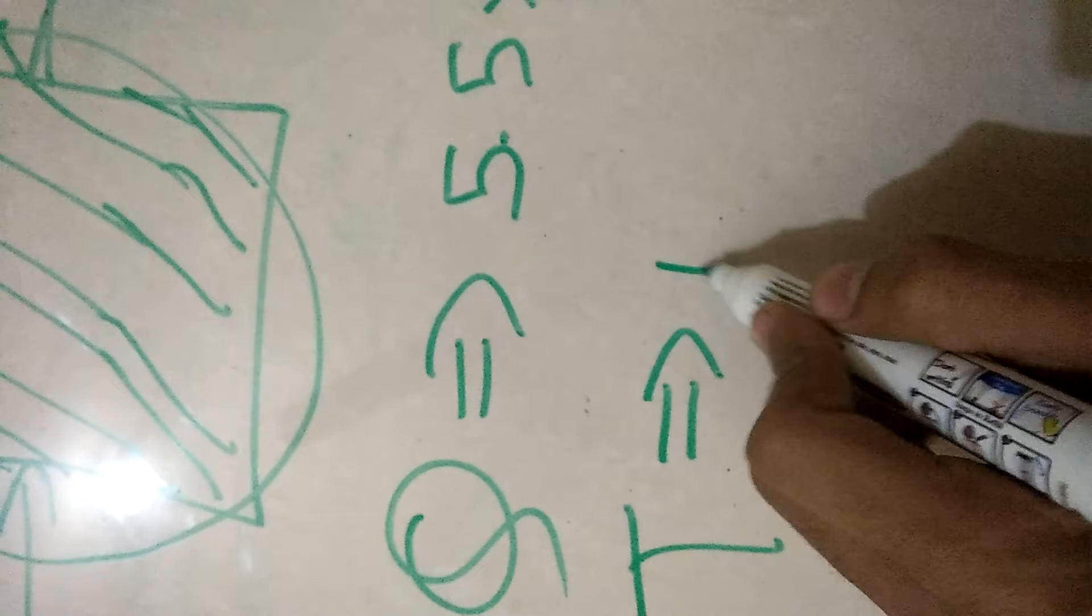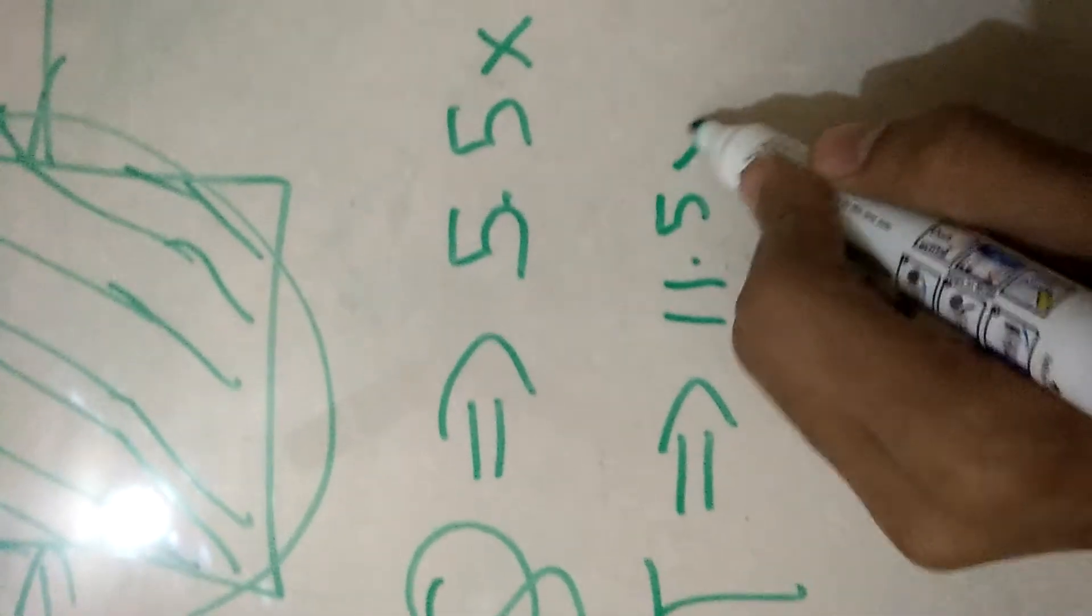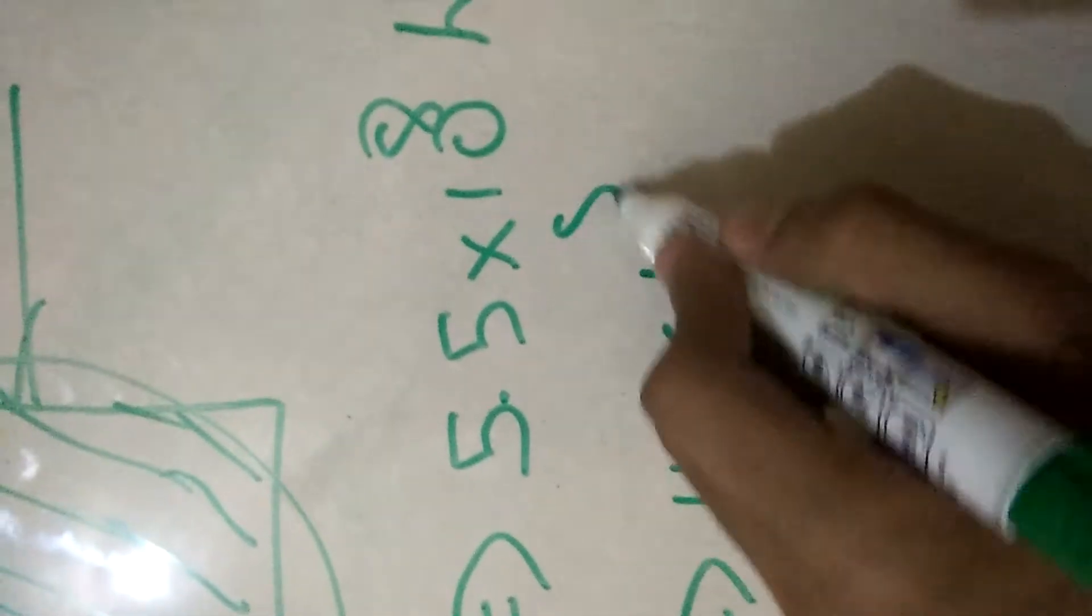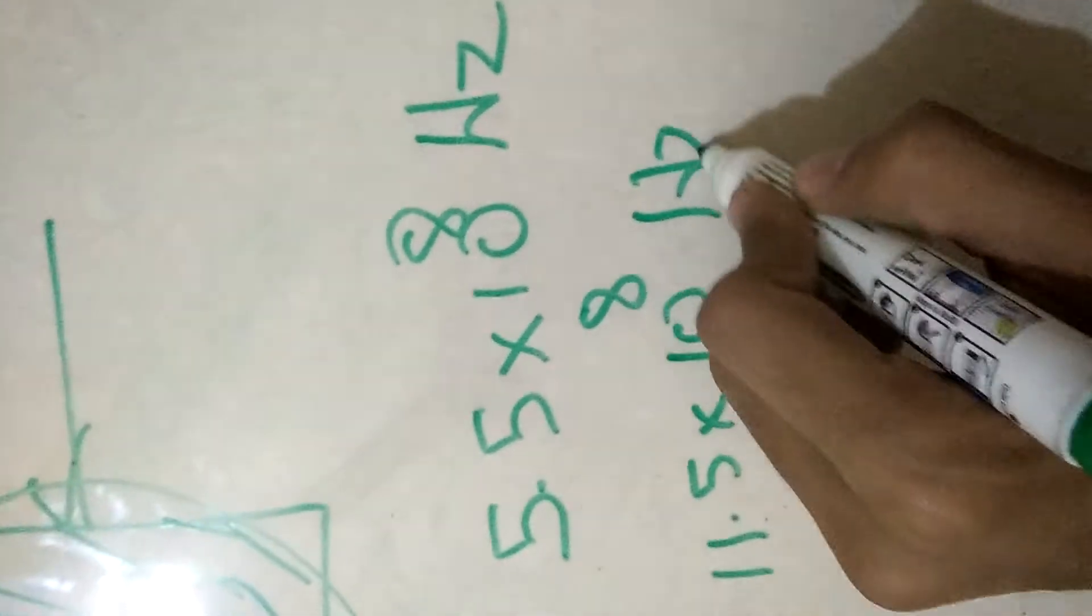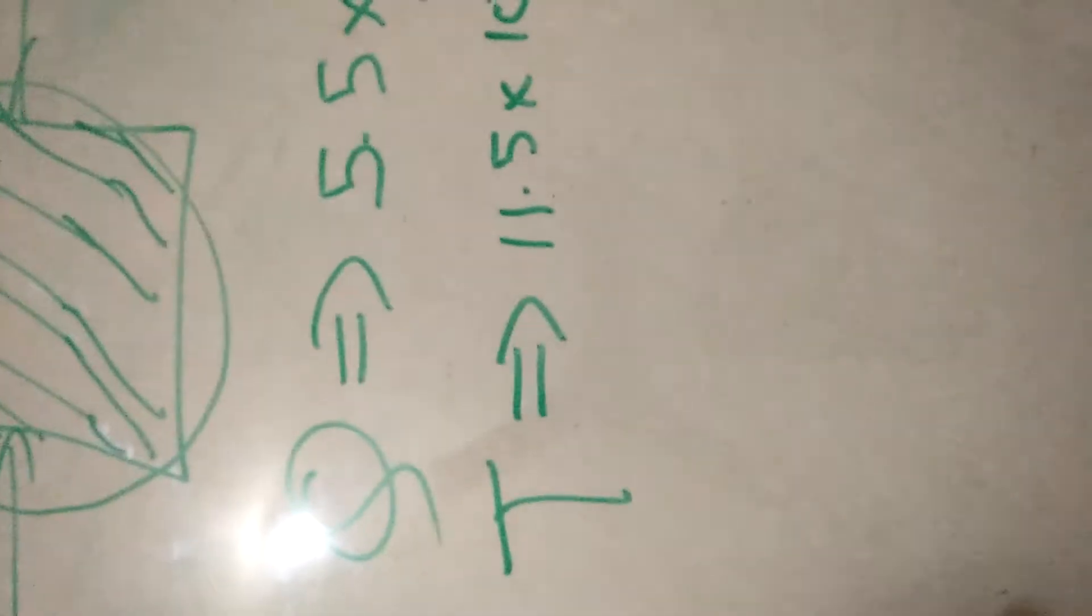And tourmaline vibrates with a frequency of 11.5 into 10 raise to 8 hertz when an AC current is applied to it. Now this frequency is calculated by general formula.